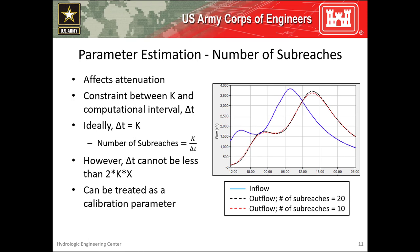The Muskingum routing method has a constraint related to the relationship between the parameter k and the computation interval. Ideally the two should be equal, but the computation interval should not be less than 2 times k times x to avoid instabilities. A long routing reach should be subdivided into sub-reaches so that the travel time through each sub-reach is approximately equal to the routing computational interval. To initially estimate this parameter, divide your estimate of k by the computational time interval. However, this parameter also acts to produce attenuation, so it can be modified during calibration.